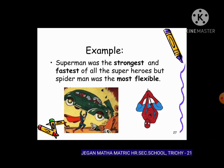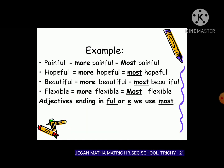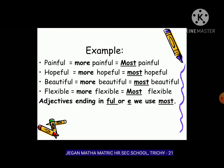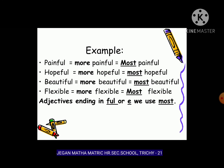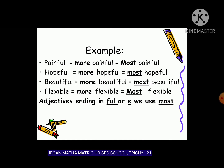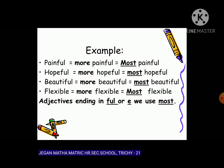So: strongest, fastest, most flexible — these are all superlative degree. For adjectives ending in -ful or -e, we use 'most' for superlative: painful → more painful → most painful; hopeful → more hopeful → most hopeful; beautiful → more beautiful → most beautiful; flexible → more flexible → most flexible.